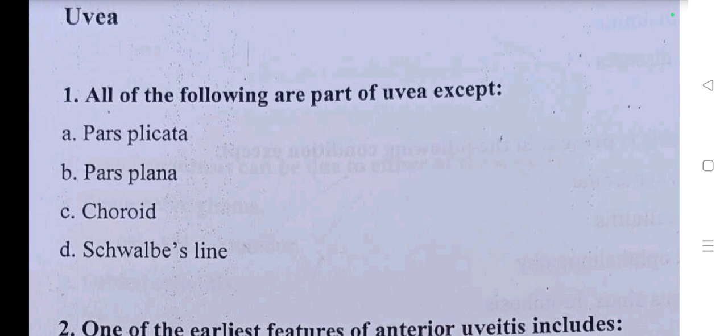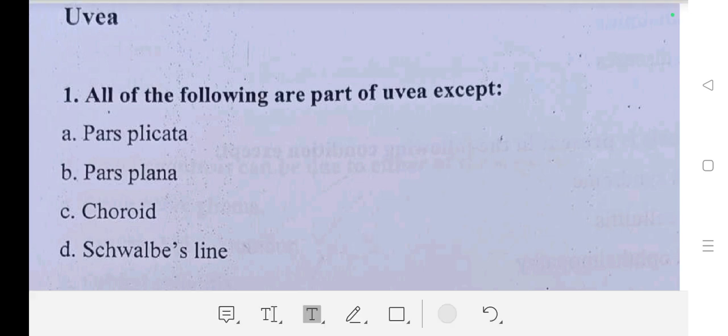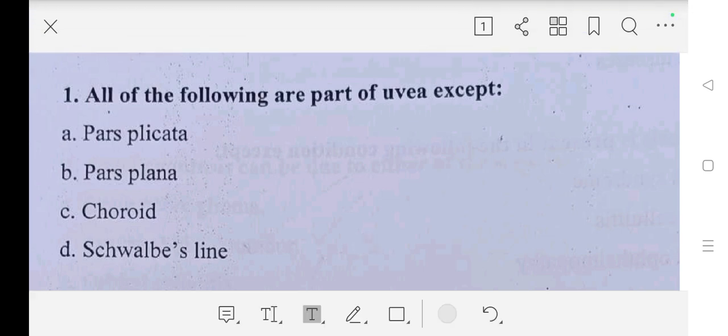Our first question is: all of the following are part of Uvea except — A part: pars plana, B part: pars plena, C part: choroid, D part: Schlemm's canal. So our answer is Schlemm's canal.